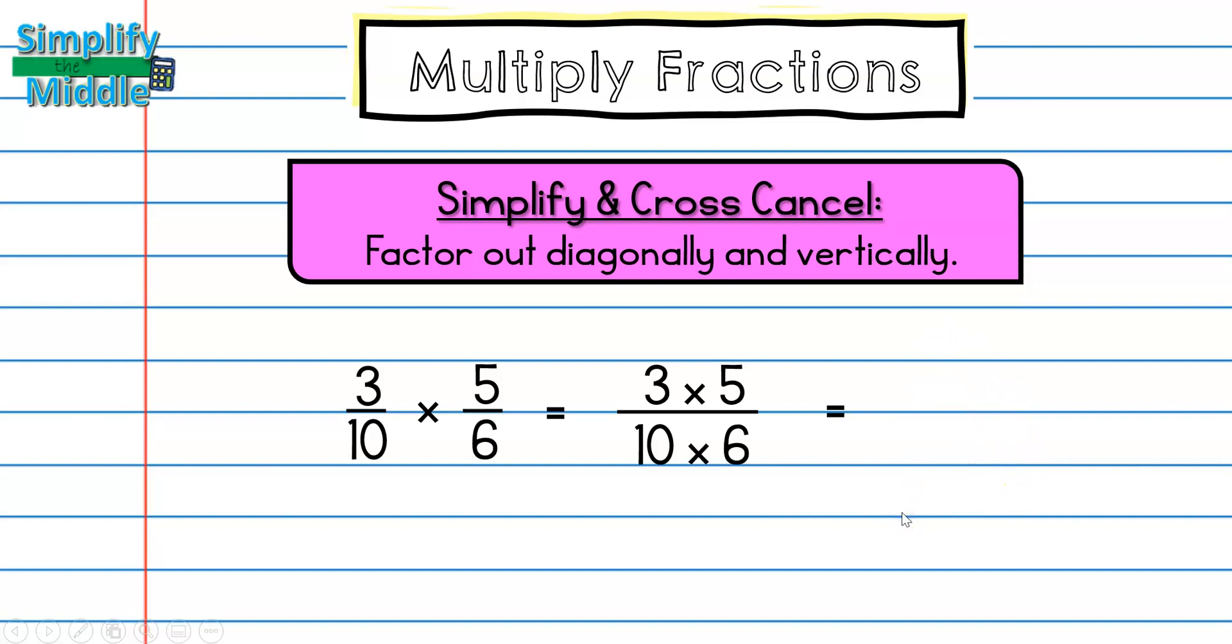So there is a faster way to do this and it is something that you'll use all through math including high school. So if I look across with my 3 and my 6, I see that they have a common factor of 3. So I can actually cross out this 3 and say 3 divided by 3 is 1. So that's what I'll write up here instead of 3.